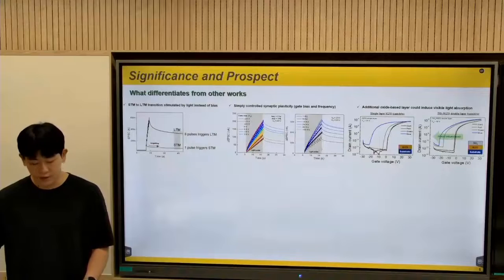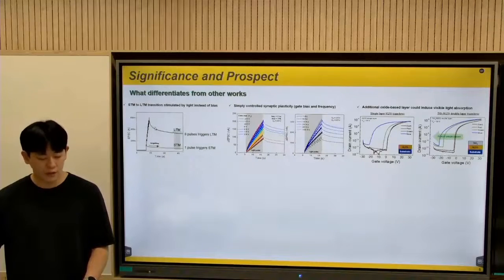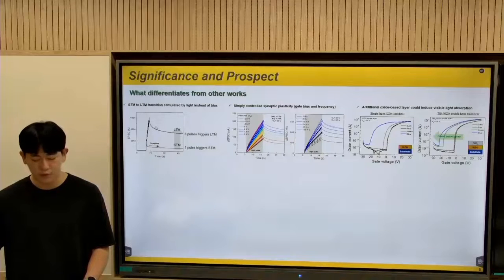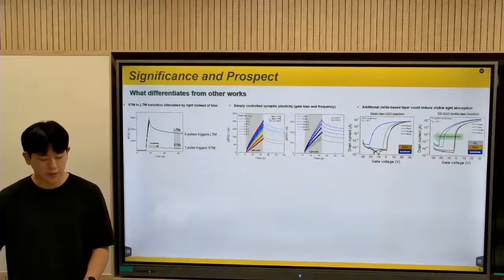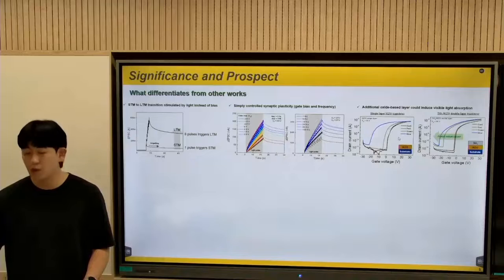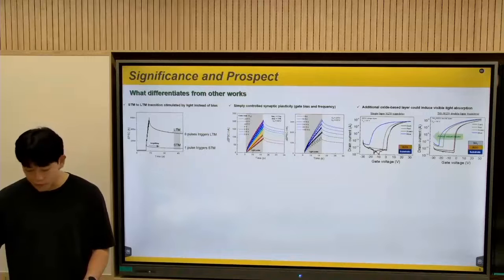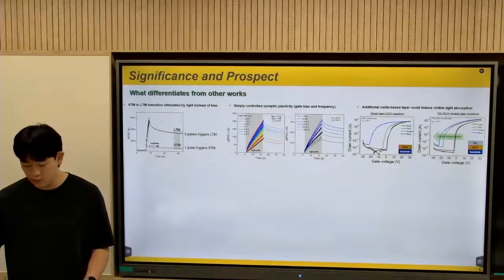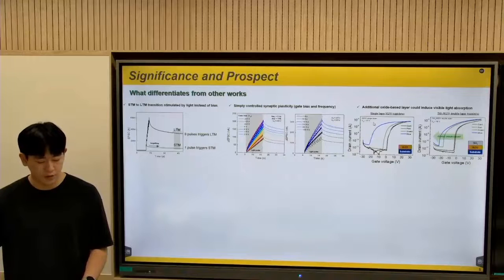Lastly, the significance. What stands out from other works would be rarity of light adoption for implementing synaptic functions. Additionally, the synaptic plasticity was effectively optimized by gate bias and frequency. Furthermore, I've recently found out that the addition of oxide layer could induce visible light absorption as well, as you can see here, which has a huge potential for the future generation visible vision applications.